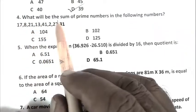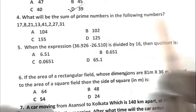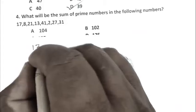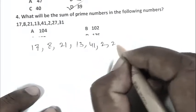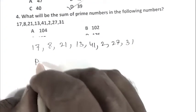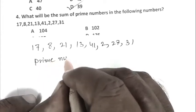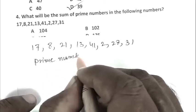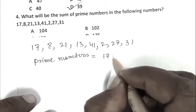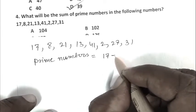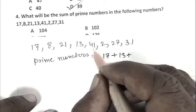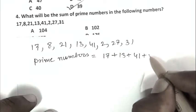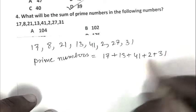Question number 4: What will be the sum of prime numbers in the following numbers? The numbers are 17, 8, 21, 13, 41, 2, 27, 31. Prime numbers are 17, then 13, then 41, then 2, then 31.